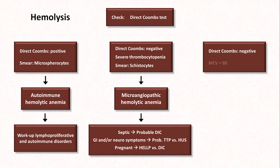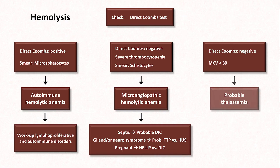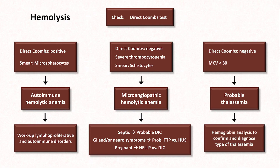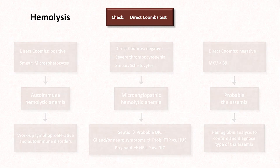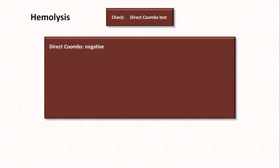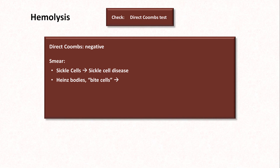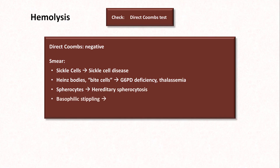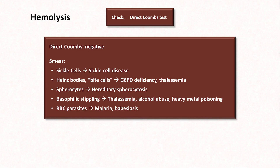If Coombs is negative and the MCV is low, a patient with hemolysis likely has thalassemia, which can be confirmed and subtyped via various methods of hemoglobin analysis. The remaining causes of hemolysis, all associated with a negative Coombs, are usually suggested by findings on a blood smear. If you see sickle cells, the patient has sickle cell disease. The presence of bite cells or Heinz bodies — red cell inclusions consisting of denatured hemoglobin — suggests G6PD deficiency or thalassemia. Spherocytes with a negative Coombs is consistent with hereditary spherocytosis. Basophilic stippling is seen in thalassemia, alcohol abuse, and heavy metal poisoning. Malaria and babesiosis can usually be identified by seeing the intracellular RBC parasites.